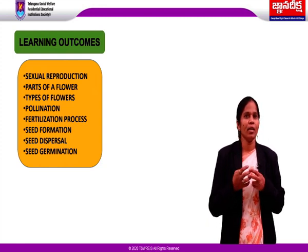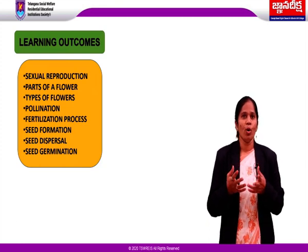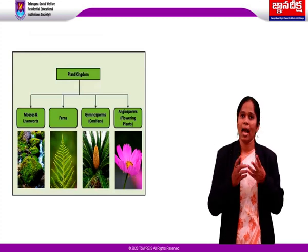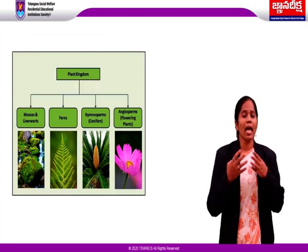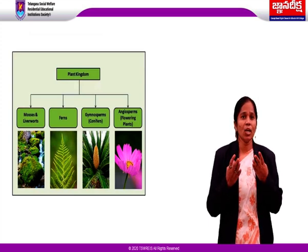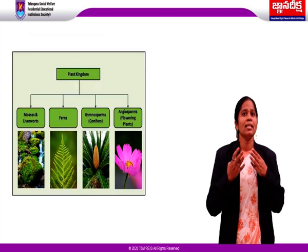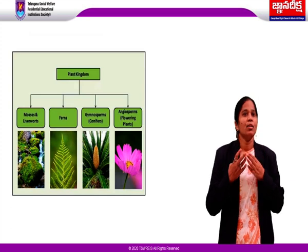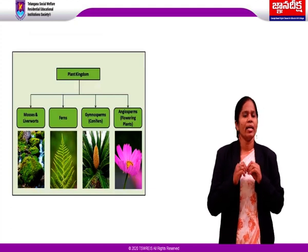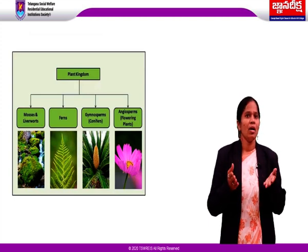Let us start our topic with basics. Do you know what is the plant kingdom? The green kingdom on the earth is called plant kingdom or Plantae. There are more than 250,000 species in the plant kingdom. Plantae includes all land plants such as mosses, ferns, conifers, and flowering plants. Ferns are more developed plants than mosses, and the plant body of ferns is differentiated into true leaves, stem, and roots.